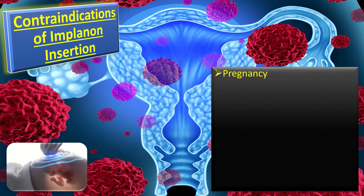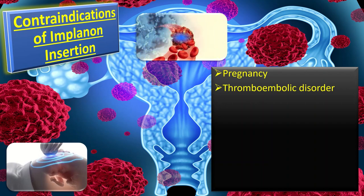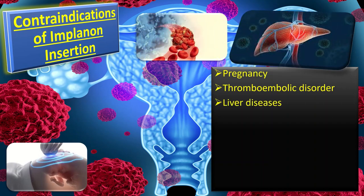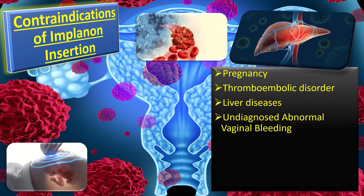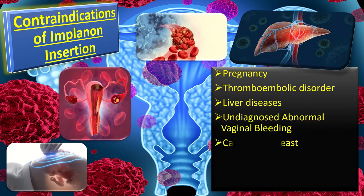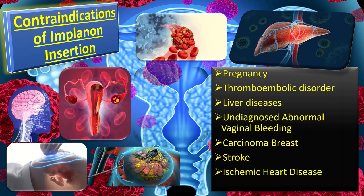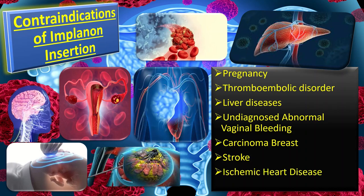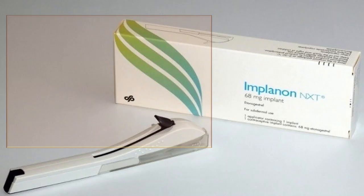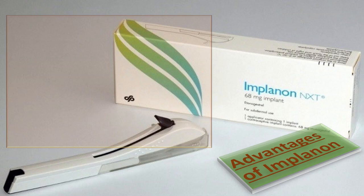The contraindications of Implanon insertion include: first, pregnancy; secondly, thromboembolic disorders; third, liver disease such as tumor, active hepatitis; undiagnosed abnormal vaginal bleeding; carcinoma of the breast; stroke; and ischemic cardiac diseases.